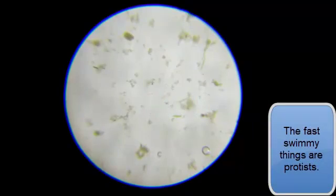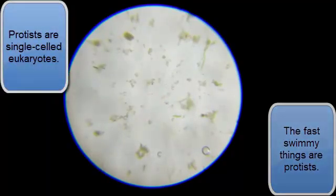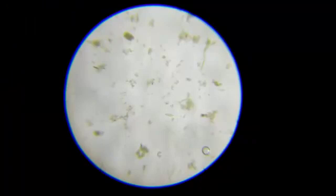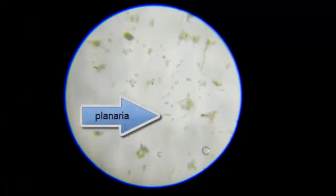So the other things that you're seeing, these green bits, are different types of algae. And I do believe, am I right, Mrs. Beaver? Is that a planarian crawling around right there?